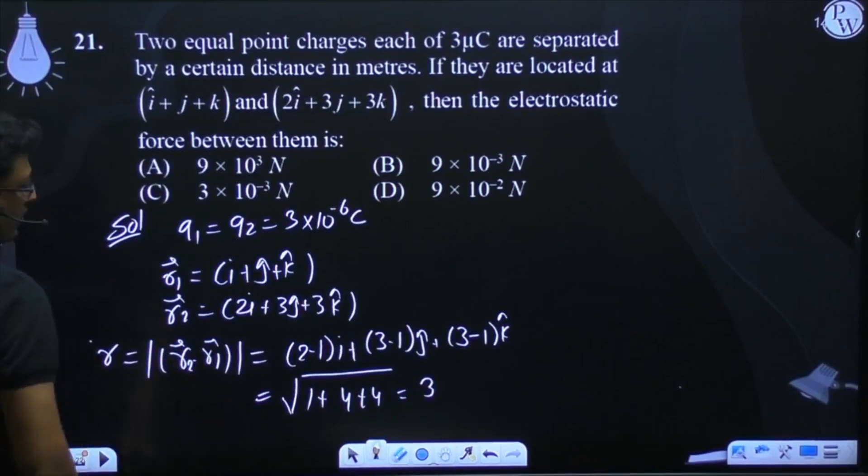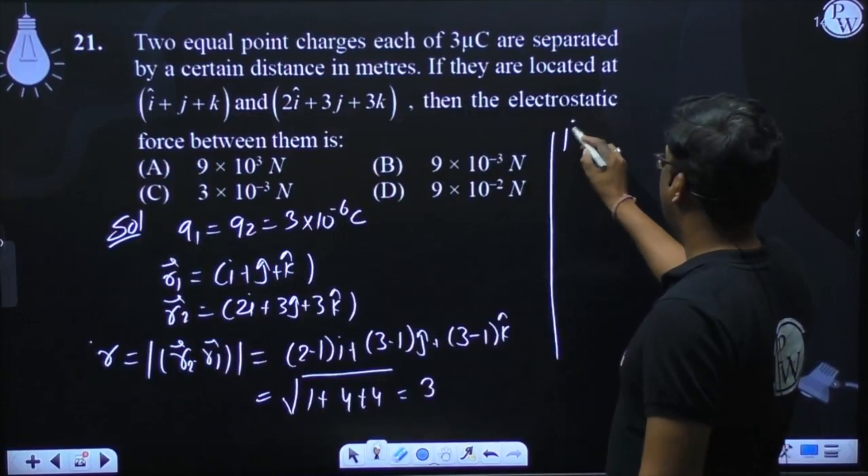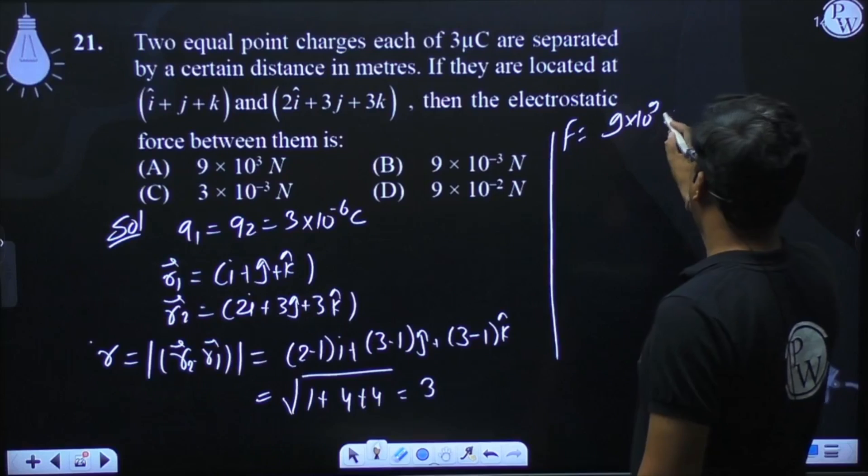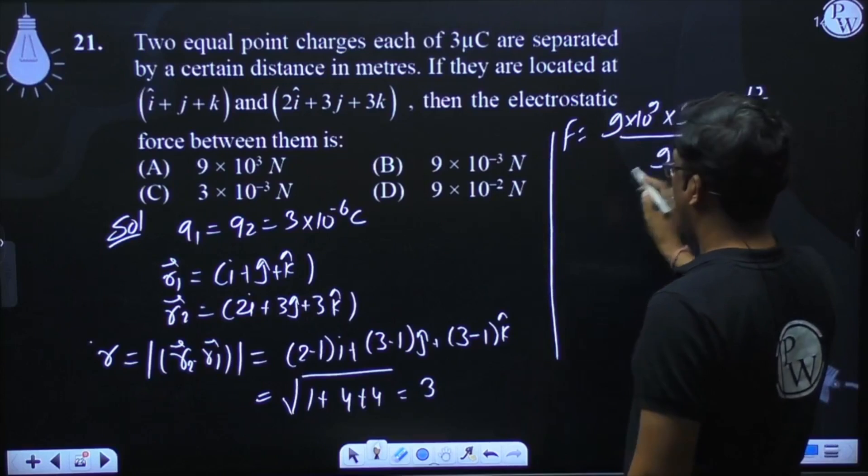Now to calculate the force, this force will be 9 into 10 to the power 9 into 9 into 10 to the power minus 12 upon 9 square.